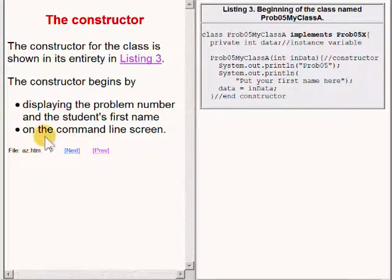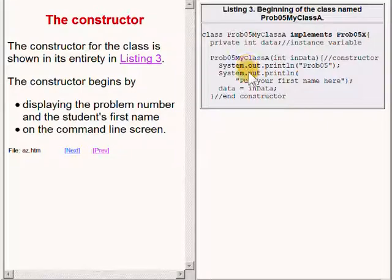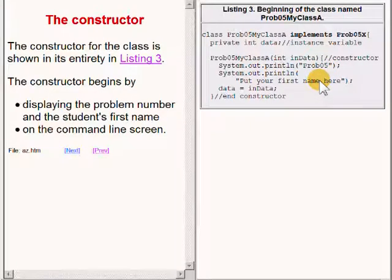The constructor for the class is shown in its entirety on the upper right of your screen. The constructor begins by displaying the problem number and the student's name on the command line screen.